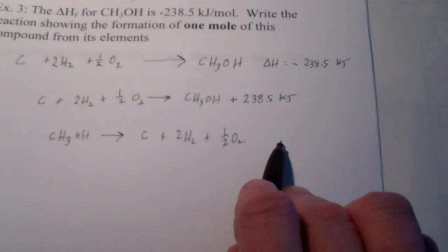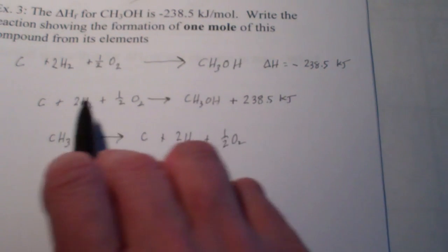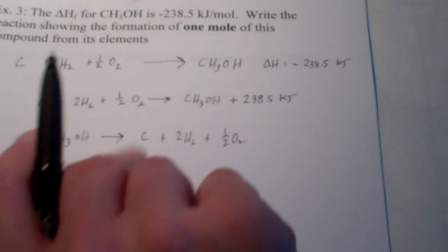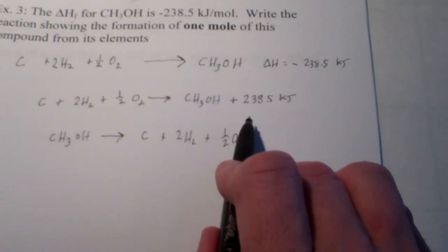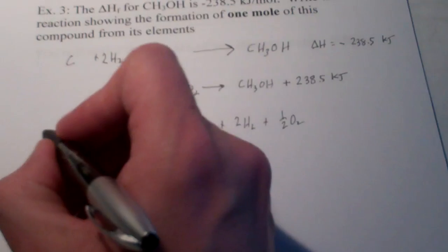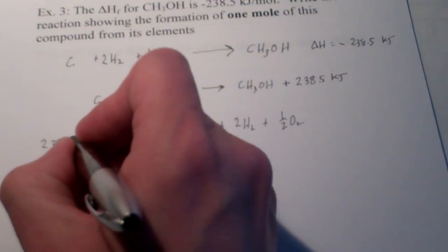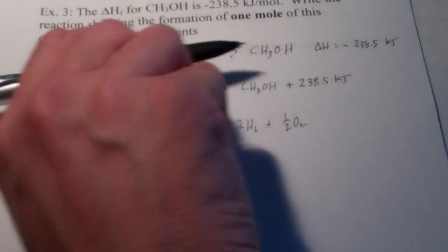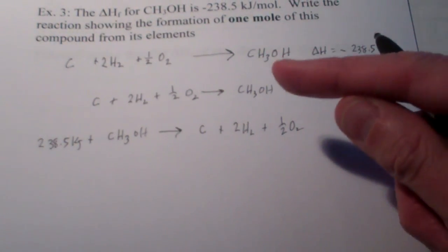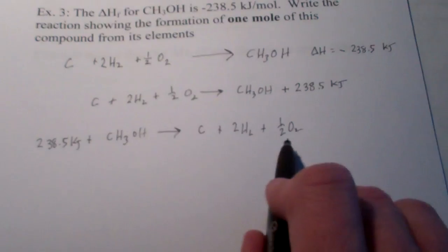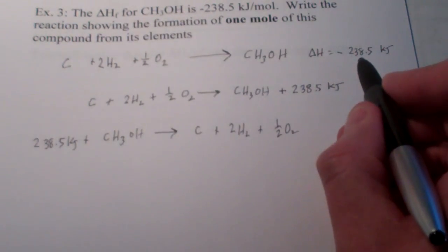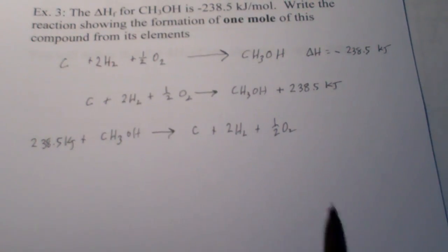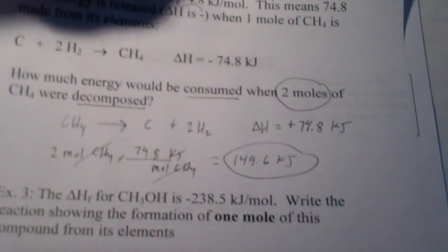Now, obviously, heat's not given off over here. Remember, when I write it in this direction, heat's a product. But when I flip the equation around, the heat must be a reactant. So I would have to add 238.5 kilojoules on this side of the reaction. When I go to the right, it's exothermic. When I flip it around, it's an endothermic reaction.